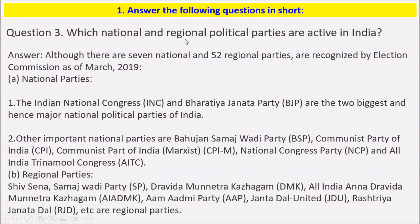Which national and regional political parties are active in India? Although there are seven national and 52 regional parties recognized by the Election Commission as of March 2019. National parties: Indian National Congress and Bharatiya Janata Party are the two biggest and major national political parties of India. Other important national parties are Bahujan Samaj Party, Communist Party of India, and Communist Party of India (Marxist).